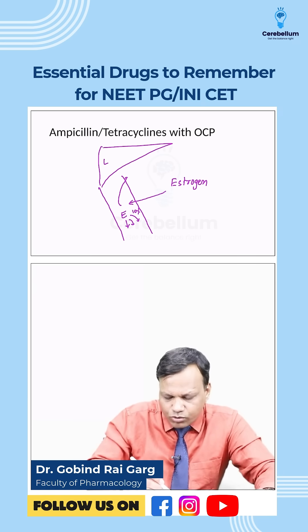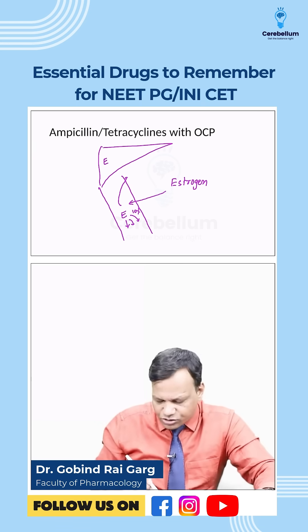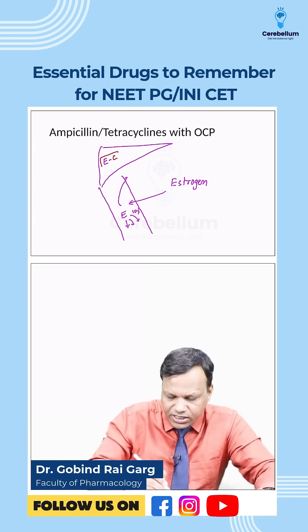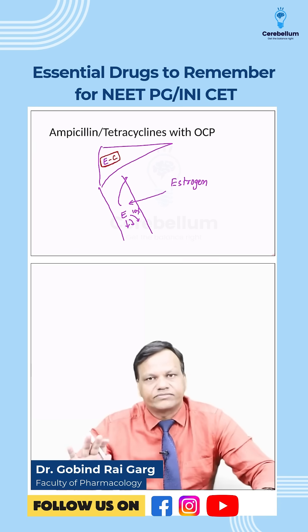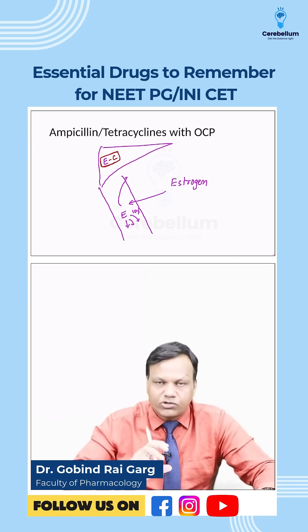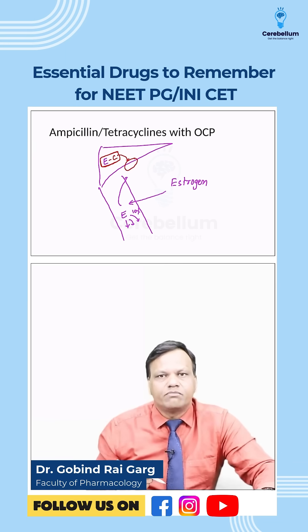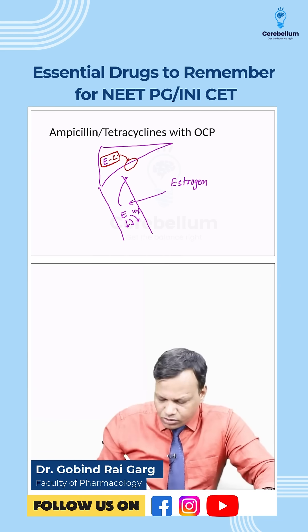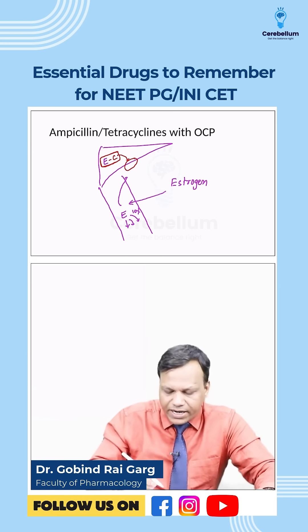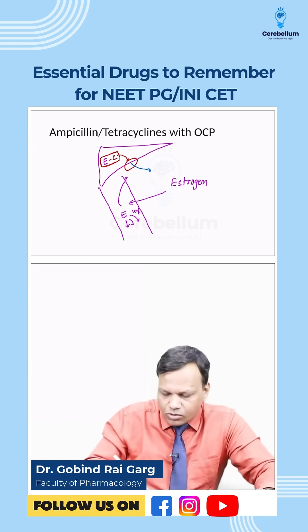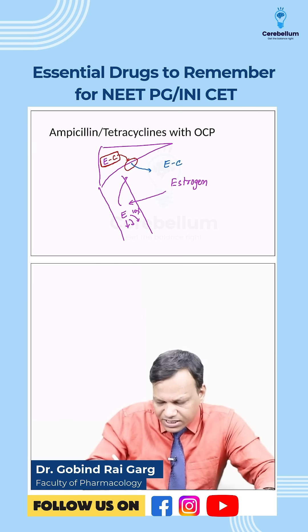In the liver, estrogen is conjugated — it is attached to a glucuronide group. This conjugated estrogen is then secreted into the bile, from where it enters the gallbladder and subsequently passes into the duodenum in the GIT.